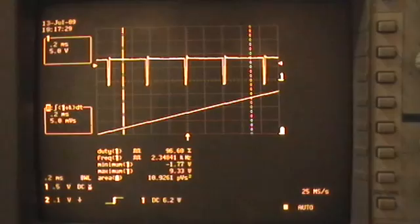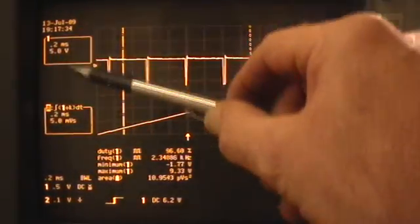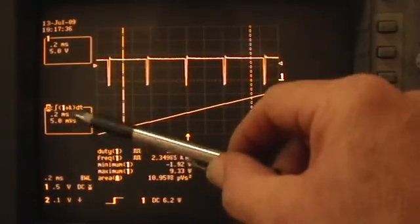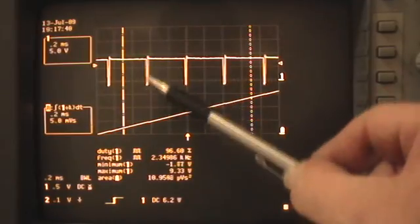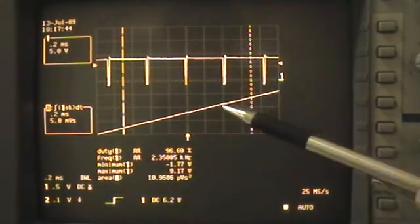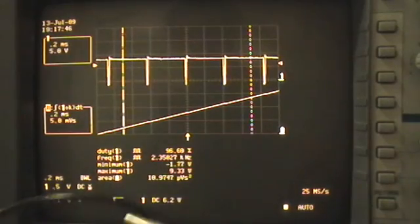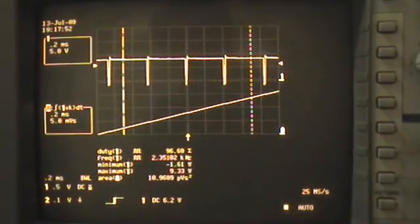The basic scope parameters are here, channel 1 and channel A. Channel 1 is this trace across the top here. And that is the signal coming directly through the 10x attenuating probe from the Ainsley 555 timer.